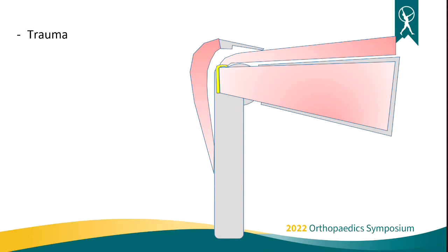In our younger patients, that rotator cuff is flexible and pliable — it's really hard to even tear at all. They can dislocate the shoulder, fracture the shoulder, and that rotator cuff will stay intact. So when we think about younger patients that have rotator cuff symptoms, it's usually not the rotator cuff that's really the problem — it's usually more of an instability issue. This talk is more about why does the rotator cuff cause pain.